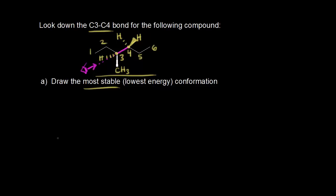We start with a point or a dot to represent carbon three. What is attached to carbon three? There is a methyl group that would be going down and to the right, so let's draw in a CH3 down and to the right. Then we also have a hydrogen going down and to the left. Next, we would have a CH2-CH3, or an ethyl group, and this would actually be going straight up.